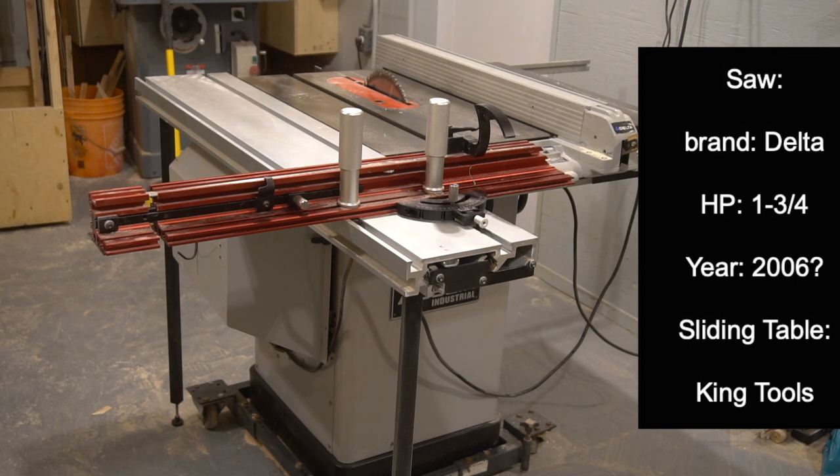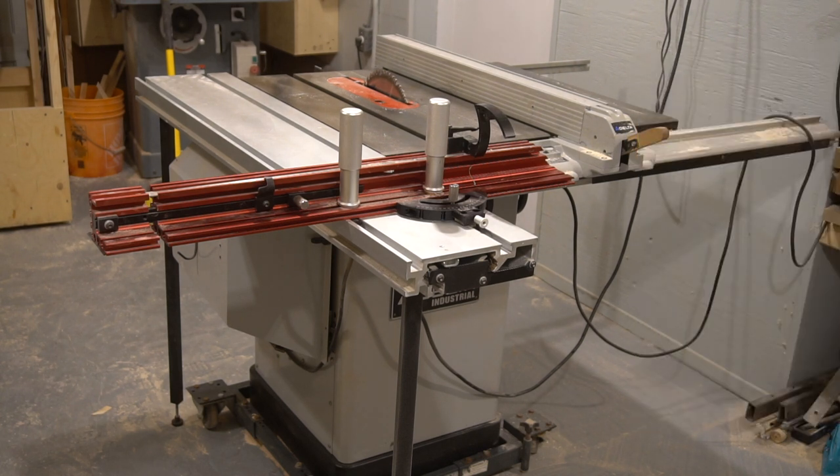And on top of that, I added a sliding table to it, which really does make it more versatile and I really enjoy that. But this saw does commit the cardinal woodworker's sin. It doesn't have a riving knife and it doesn't have a blade guard.